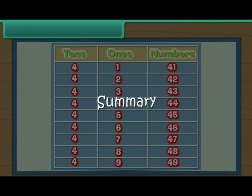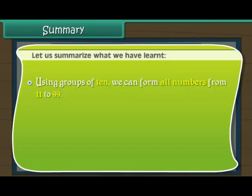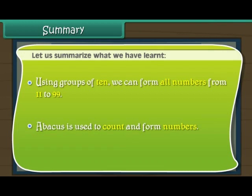Summary. Let us summarise what we have learnt. Using groups of ten, we can form all numbers from 11 to 99. An abacus is used to count and form numbers.